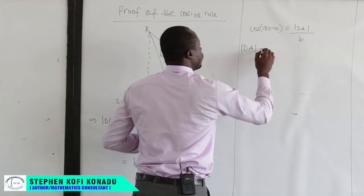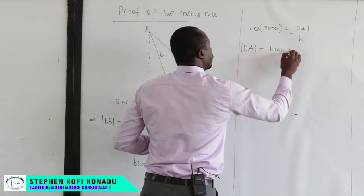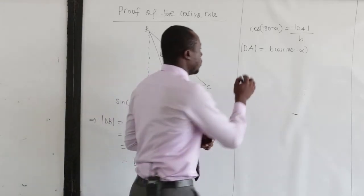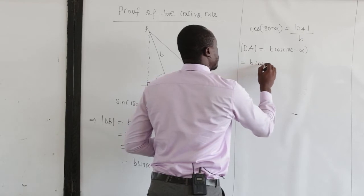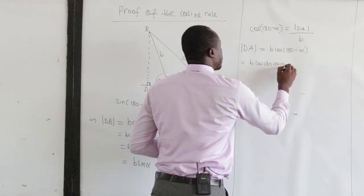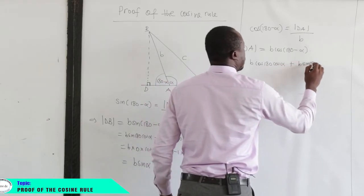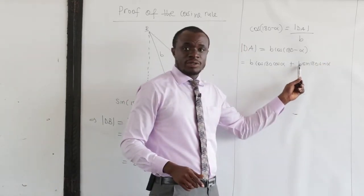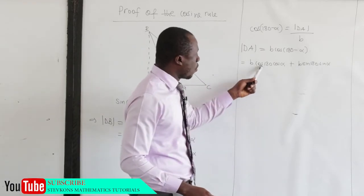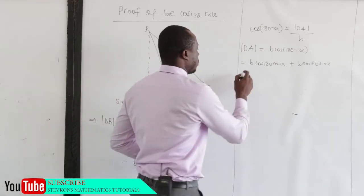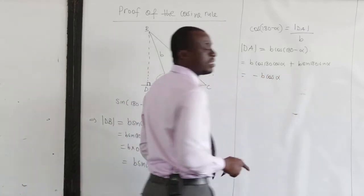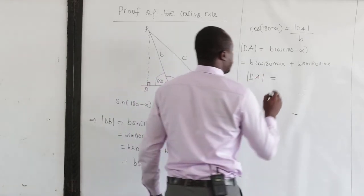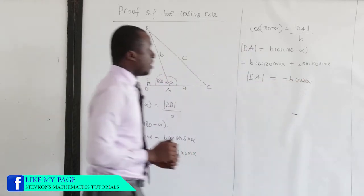Therefore our DA will be equal to b·cos(180 minus alpha). When we expand this, we get b·cos(180)·cos(alpha) plus b·sin(180)·sin(alpha). Since sin(180) is 0, the second term becomes 0. And since cos(180) is negative 1, we get DA equals negative b·cos(alpha).